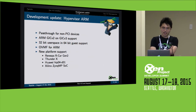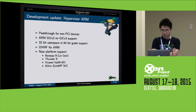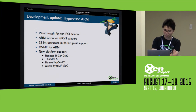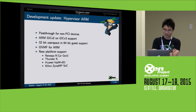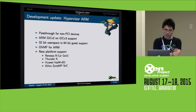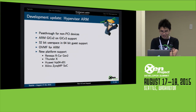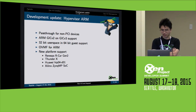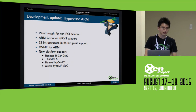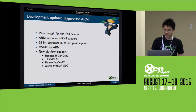On the ARM side of improvements, we've successfully merged pass-through for non-PCI devices, ARM GICv2 and GICv3 support. We also re-enabled 32-bit userspace in 64-bit guest support. Linaro contributed the OVMF on ARM patch series. We also had a bunch of new platform supports such as ThunderX, Huawei, and Xilinx SoC platforms.